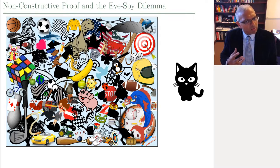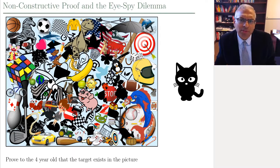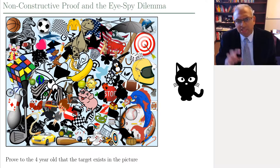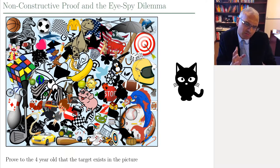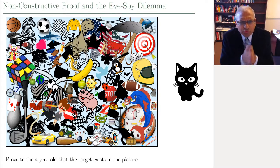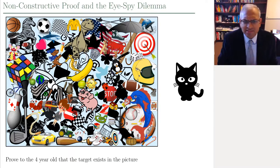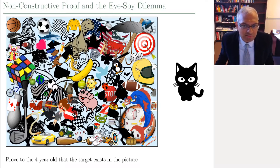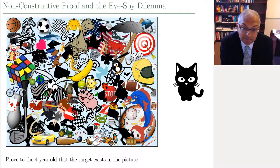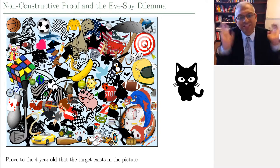I need to somehow prove to my four-year-old that the cat exists in this picture, but if I go and show him where it is, then the puzzle is useless — that defeats the whole purpose. So think to yourself: how would you prove to a four-year-old that this black cat exists in this picture? Trust me, the black cat exists. You'll start thinking, really? I don't think it exists. This is a joke. So I'm going to try to prove to you that the black cat exists, but how would I do that without giving the game away? That's the challenge.